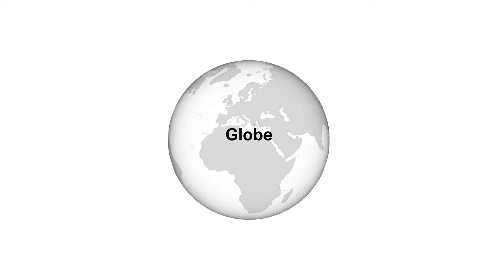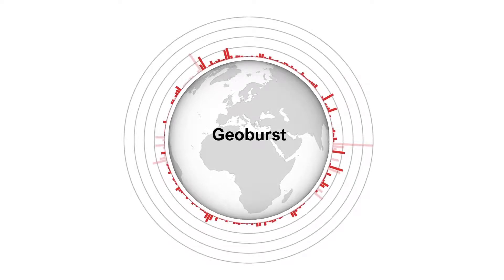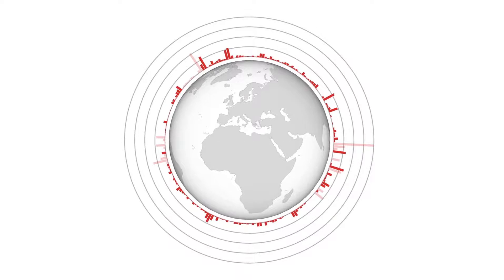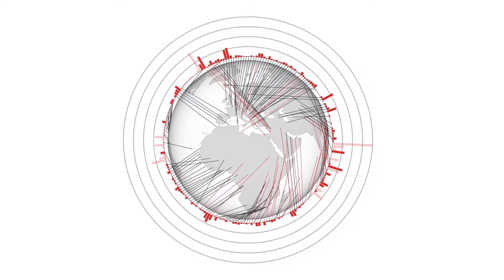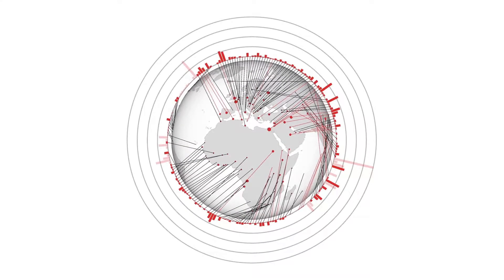We use the composite visualization approach by wrapping radial bar charts along the globe. GeoBurst shows quantitative values on the radial bar charts and links them to their geospatial position. We indicate values on the hidden hemisphere as faded out bars, and we can also add tangential circles onto the globe.